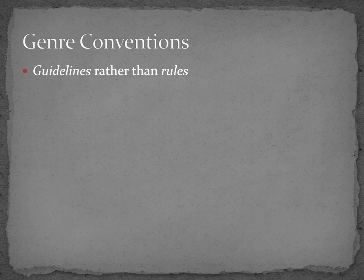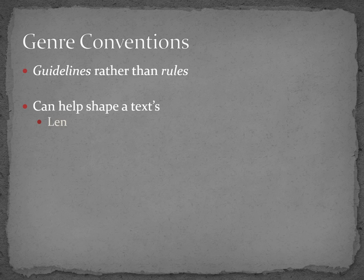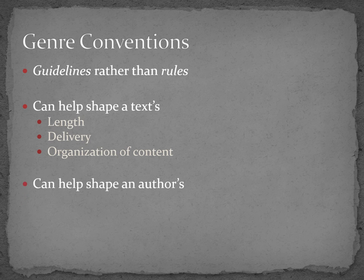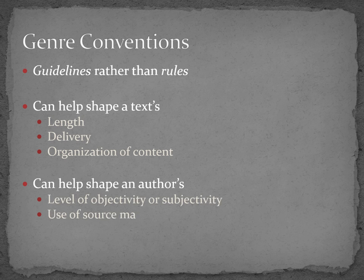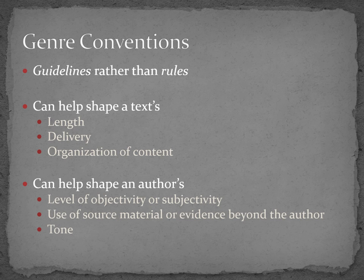Genre conventions guide what a text should do, but might not always do, and what an author should do, but might not always do. For example, genre conventions can help influence features of the text, such as its length, the way it is delivered, or the content's organization or structure. Genre conventions might also shape the way an author is expected to write, such as the level of objectivity or subjectivity permitted, whether or not he or she is expected to include research, and his or her tone. Thus, part of what this course and your textbook will do is walk you through several genres and share with you that genre's conventions, so you learn to recognize what makes a news article a news article and what makes it different from a peer-reviewed journal article or a photo essay.